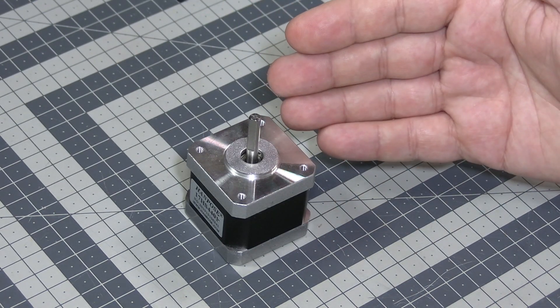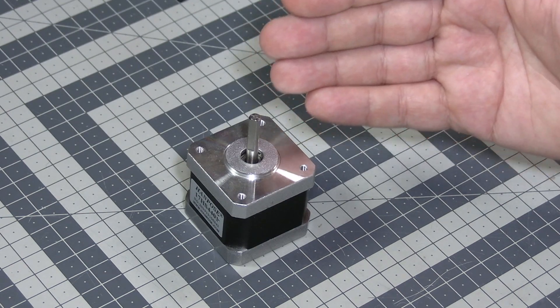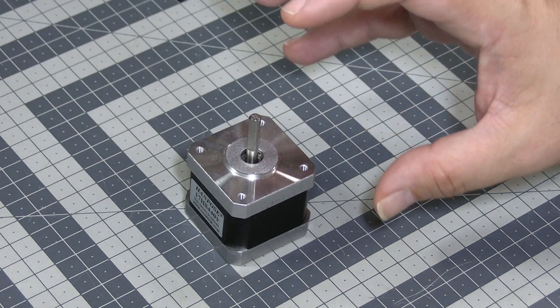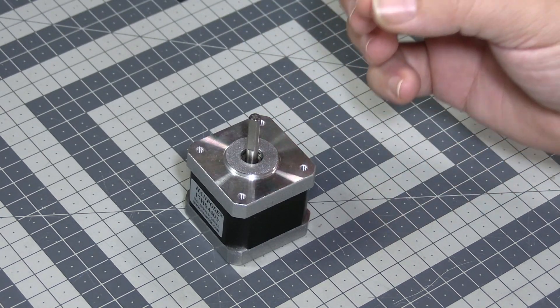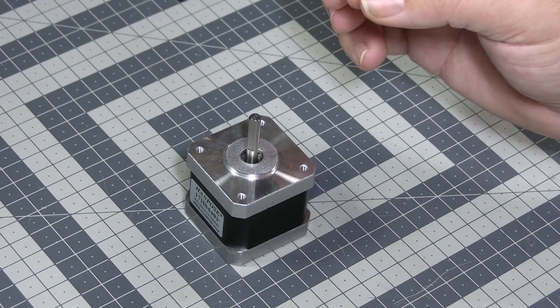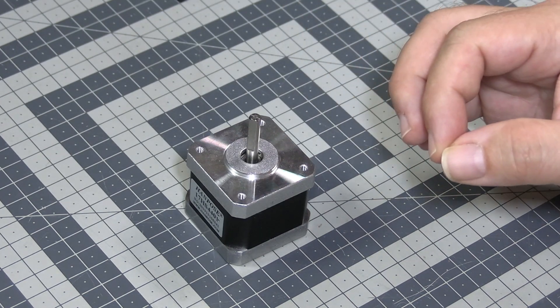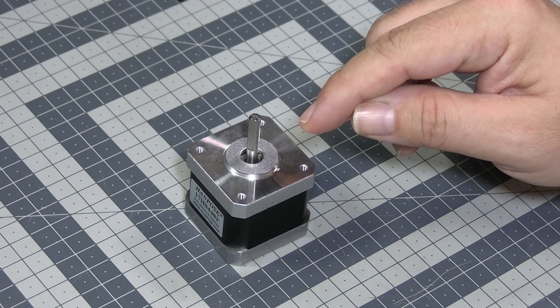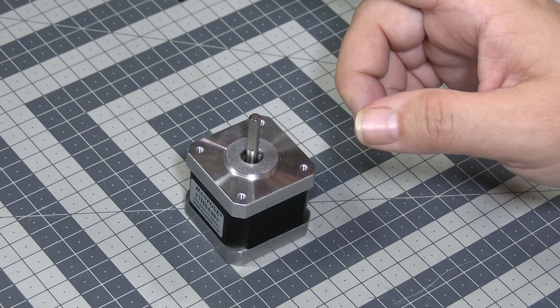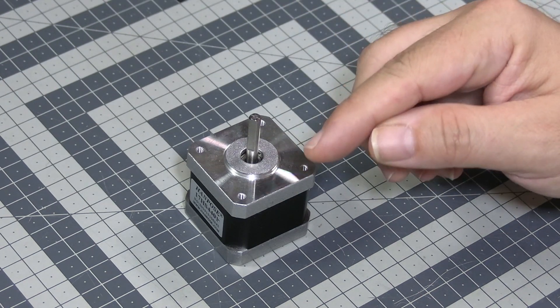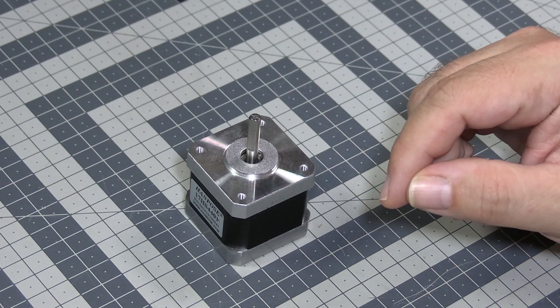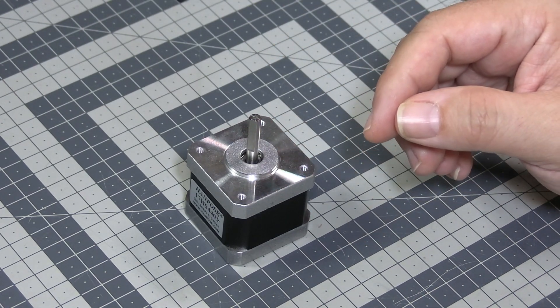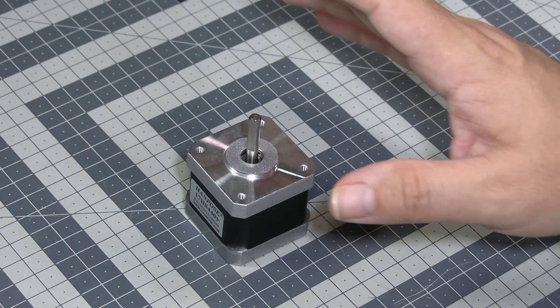Great thing if you want to precisely rotate the shaft, precisely rotate something, so something is in the precise position whenever you want it. Because this thing, if you demand 10 steps from it, it will always move the 10 steps, unless of course it stalls and loses the position.